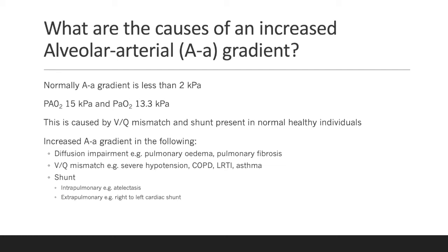Increased alveolar arterial gradients, as we would see in certain diseases, can be caused by the following: diffusion impairment — for example, pulmonary oedema and pulmonary fibrosis; VQ mismatch, as we would see in severe hypotension, COPD, lower respiratory tract infection, and asthma; and finally, pathological shunt. An intrapulmonary example would be atelectasis, and an extrapulmonary example would include right-to-left cardiac shunt.